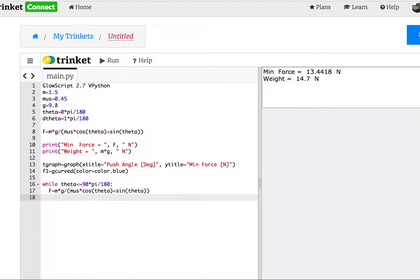Step two, plot the force and the angle. f1 dot plot. On the x axis, I want the angle theta. Now I need to convert it back to degrees, 180 divided by pi. And then the force, f. Now I need to increase theta. If I don't do that, this will never stop running. So theta equals theta plus d theta.